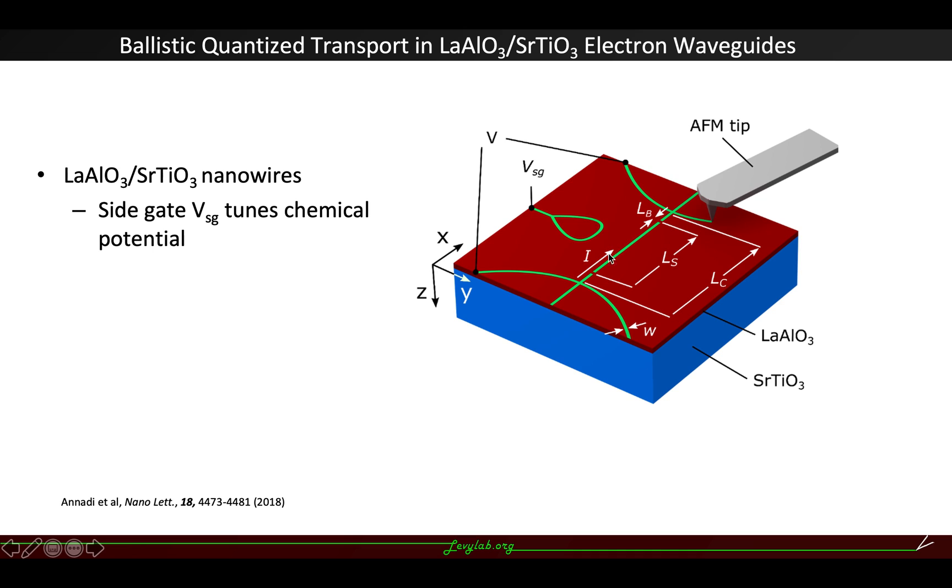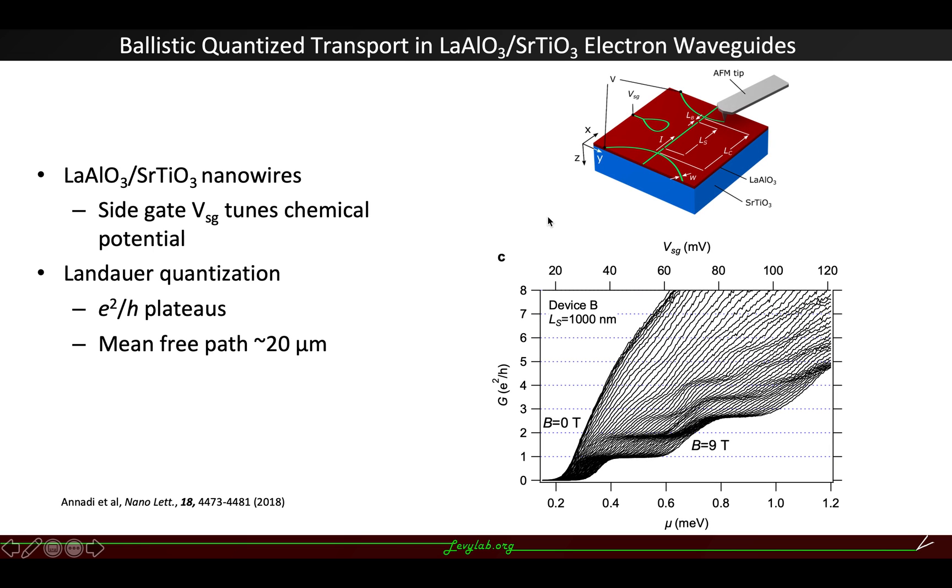The chemical potential of the segment can be efficiently tuned by this side gate voltage. The 1D ballistic transport is well described by the Landauer formula.